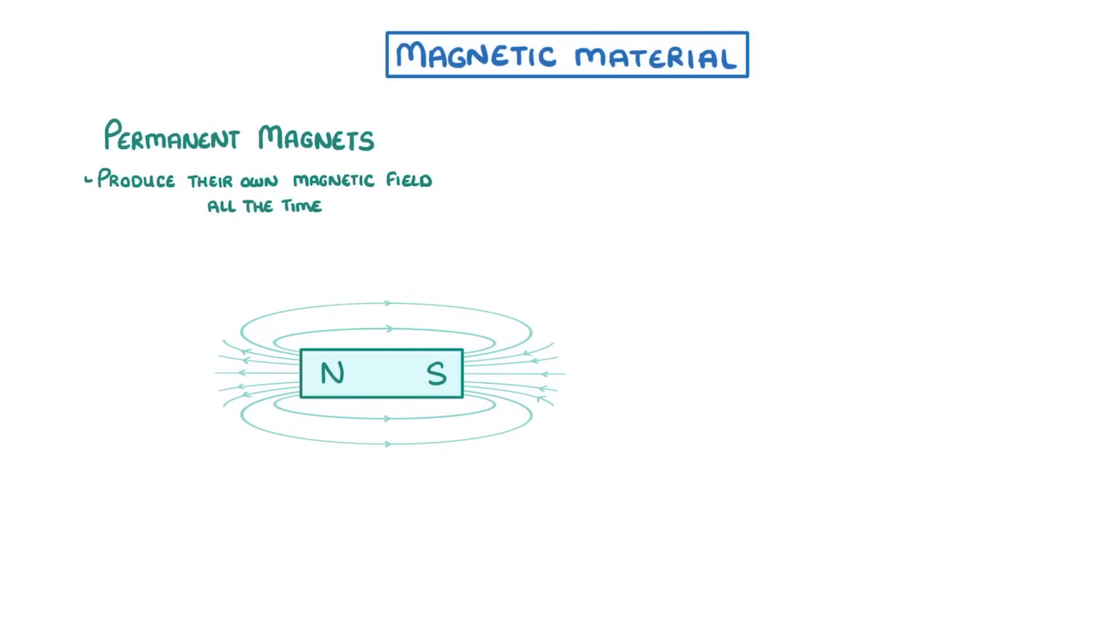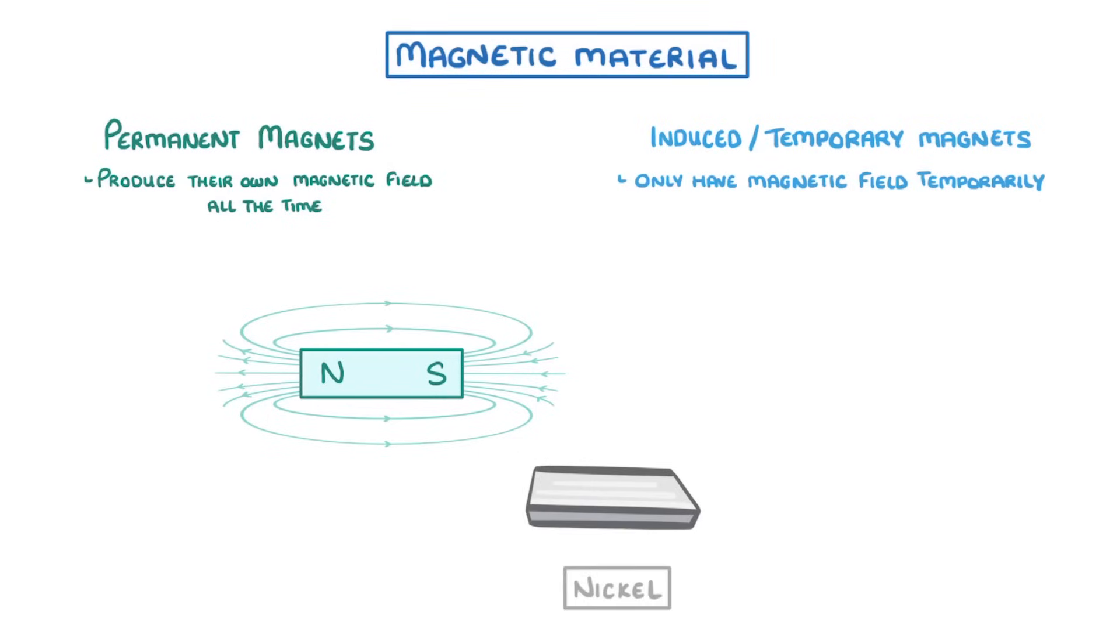There are another group of magnets though, which we call induced or temporary magnets, which only have a magnetic field temporarily. These are made when a piece of magnetic material, which wasn't actually a magnet, like your average piece of nickel, is put into the field of a permanent magnet.